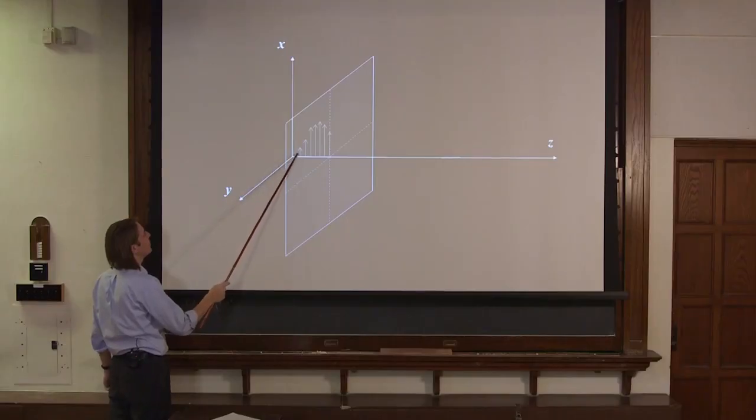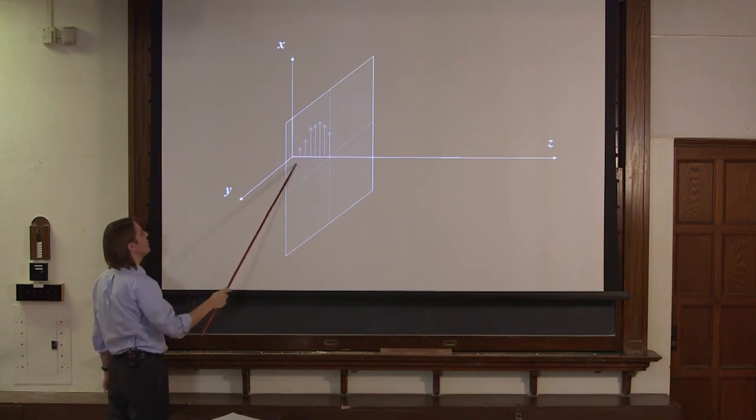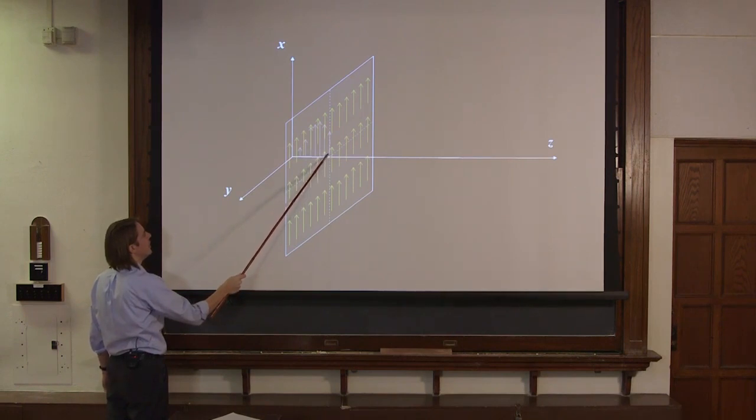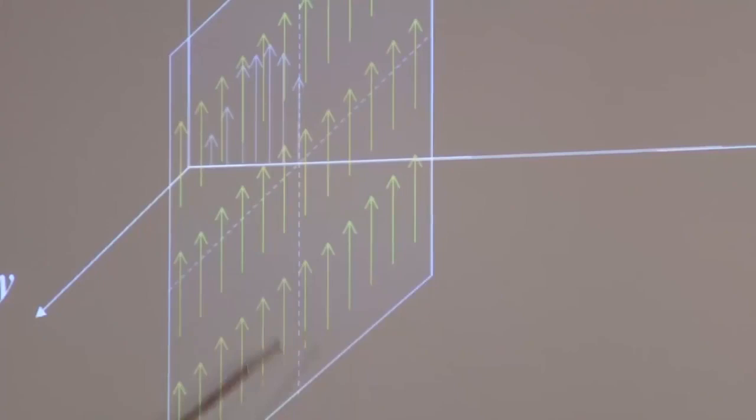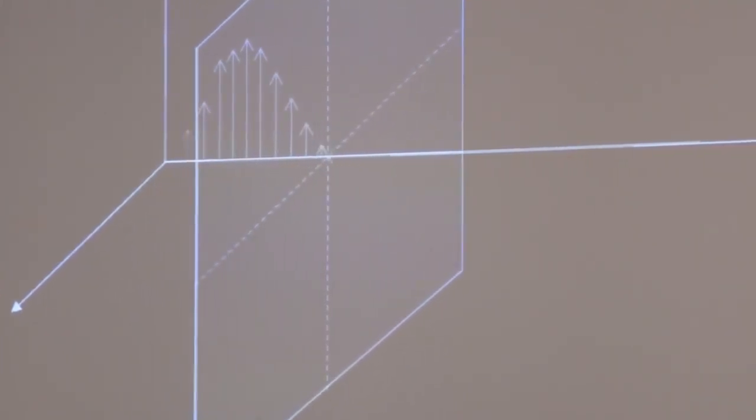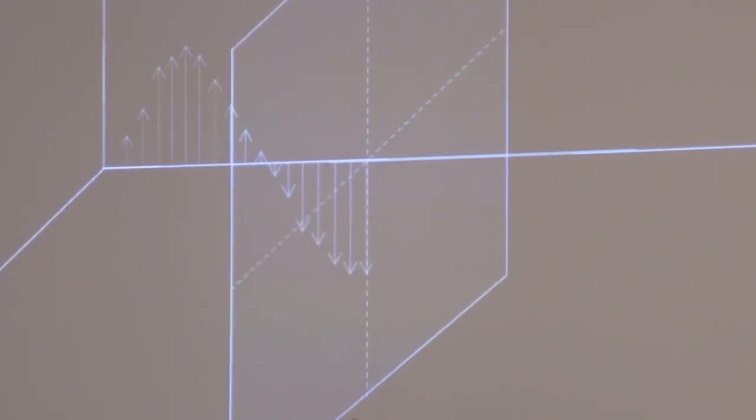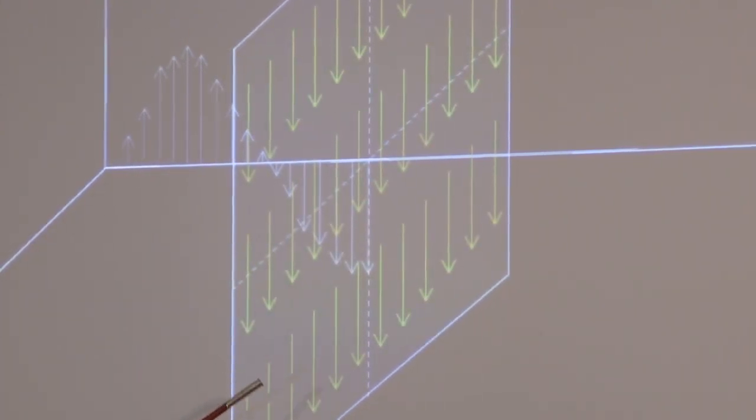But here it is, a sinusoidally varying e-field magnitude in the x-direction, no component in the y-direction and no component in the z-direction. And if you stop at one point along the sine, everywhere in this plane has the same e-field as the one right here on the z-axis. And then it can propagate forward sinusoidally, and then here it's down, and everywhere in the xy-plane the e-field is down.